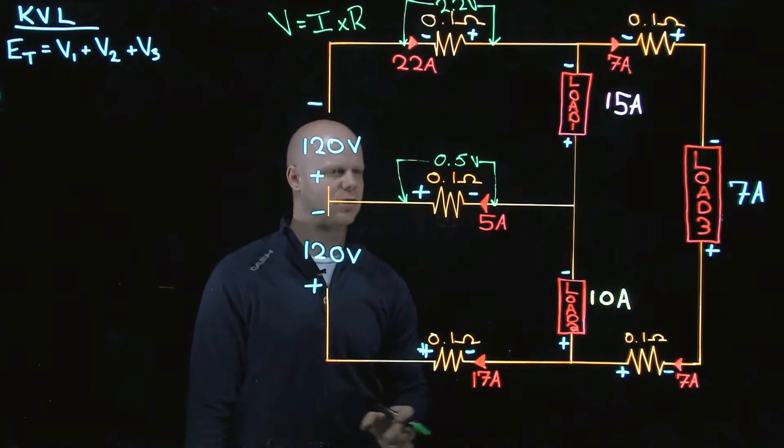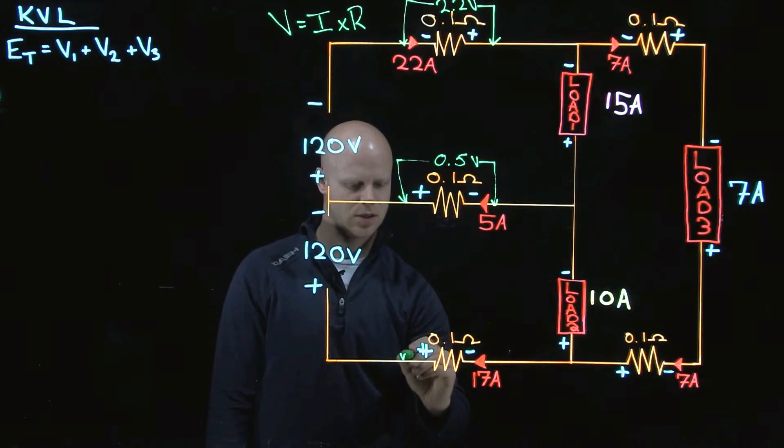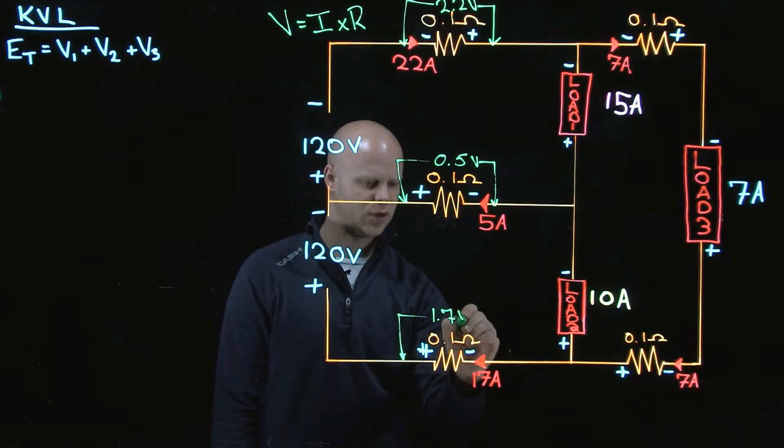That's the volt drop across my neutral conductor. If I look down here, I would have 1.7 volts.